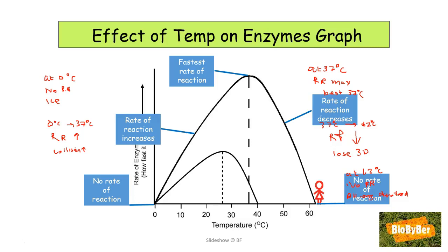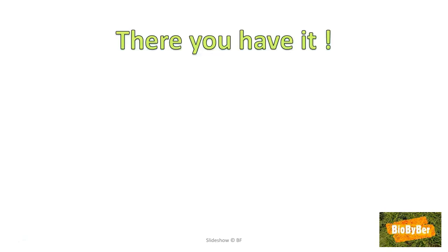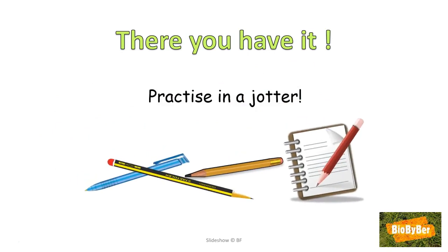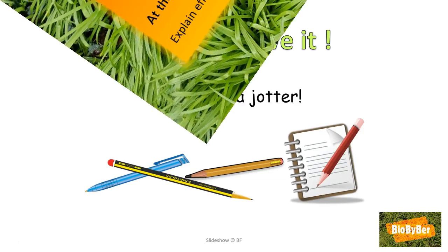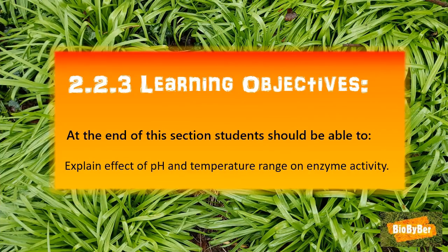Following our hill walking trip, we have now succeeded in interpreting the graph. Make sure you are able to draw all of these graphs, label the axes properly, and understand what they represent — practice in a jotter. Now that we've reached the end of our lesson, have we achieved our objective? Can you explain the effect of pH and temperature range on enzyme activity?